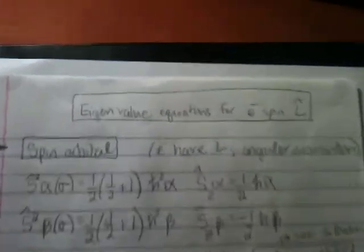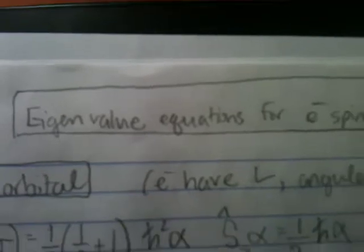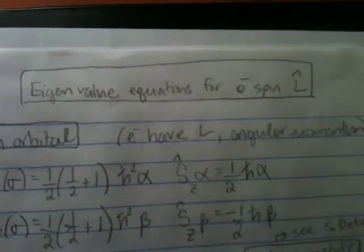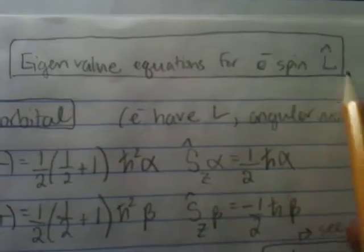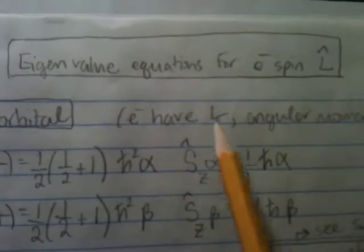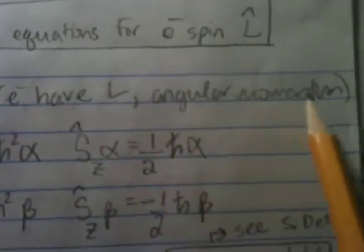Okay, so with orbitals come orbital spins. Here we have eigenvalue equations for the electron spin angular momentum. So surprise, surprise, electrons have angular momentum.